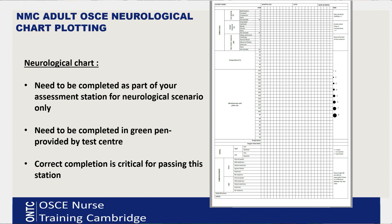As a quick refresher: what is the GCS chart, which is your neurological chart? If you are given this in your assessment station, it needs to be completed as part of your assessment station for a neurological scenario only. That would normally be a scenario such as a neurological admission — for example, a subdural hematoma or something similar. That's the only time you complete a neurological observation chart. Every other time you will be given a NEWS chart to complete.